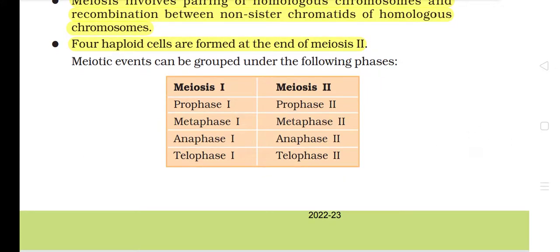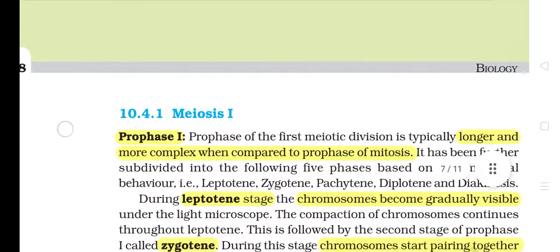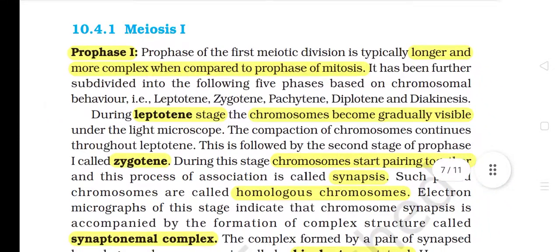Meiotic events can be grouped under the following phases — Meiosis I: Prophase I, Metaphase I, Anaphase I, Telophase I; Meiosis II: Prophase II, Metaphase II, Anaphase II, Telophase II. 10.4.1 Meiosis I, Prophase I. Prophase of the first meiotic division is typically longer and more complex compared to prophase of mitosis. It has been further subdivided into five phases based on chromosomal behavior: leptotene, zygotene, pachytene, diplotene, and diakinesis. During the leptotene stage, the chromosomes become gradually visible under the light microscope and the compaction of chromosomes continues throughout leptotene. This is followed by the second stage called zygotene, during which chromosomes start pairing together — this process of association is called synapsis.